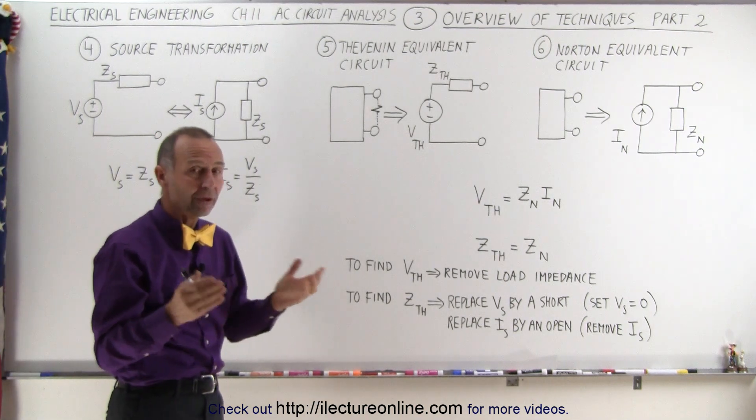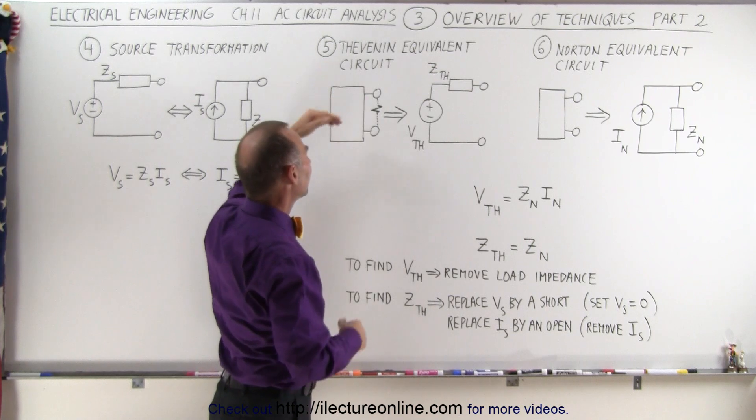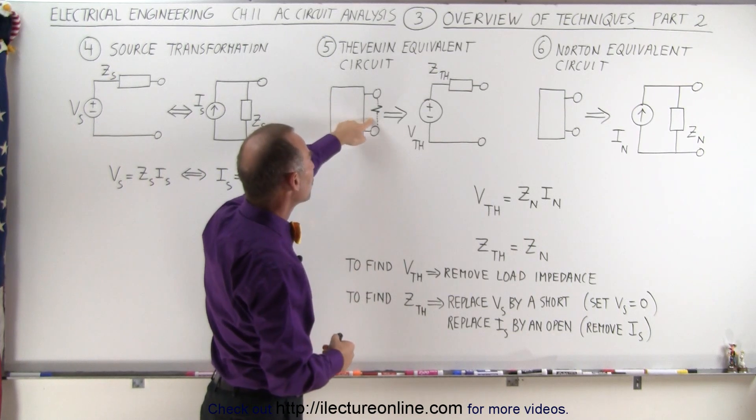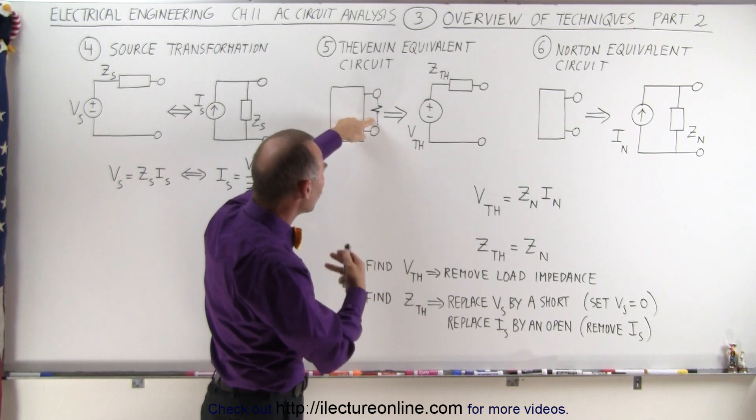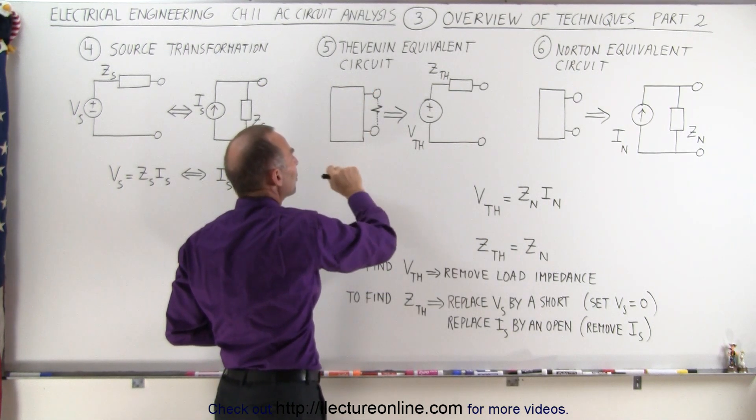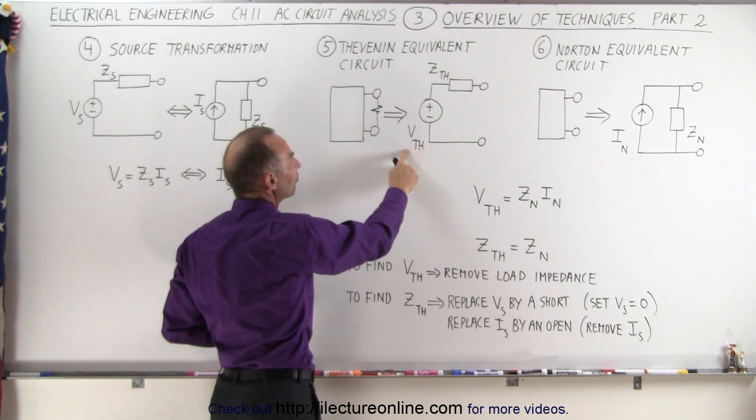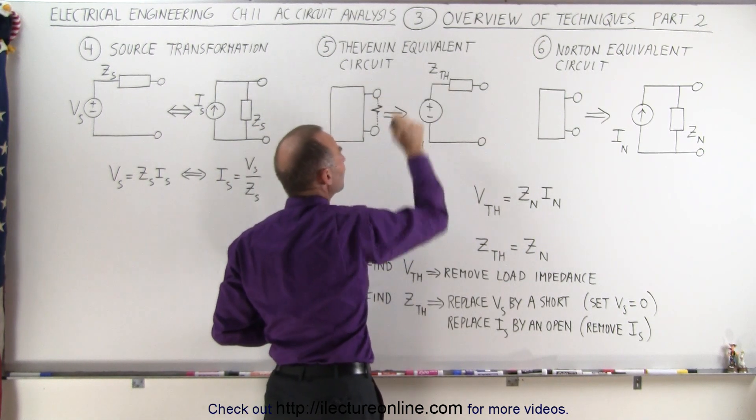The next two techniques are very related to one another. The Thévenin equivalent circuit is typically used when we want to remove the load resistor or the load impedance. So we have a circuit right here, we have a load impedance, and then what we do is we remove the impedance and we then calculate the Thévenin voltage and the Thévenin impedance.